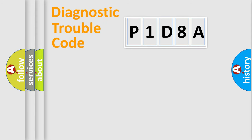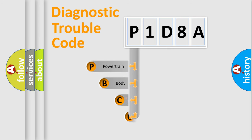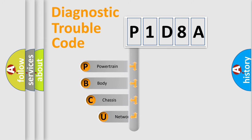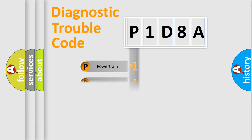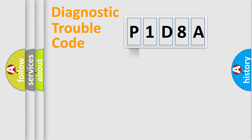Let's do this. First, let's look at the history of diagnostic fault code composition according to the OBD2 protocol, which is unified for all automakers since 2000. We divide the electric system of the automobile into four basic units: Powertrain, Body, Chassis, and Network.